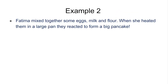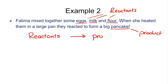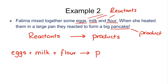Let's try another example using a very basic, non-chemical scenario. Fatma mixed together some eggs, some milk, and some flour, and when she heated them in a large pan they reacted to form a pancake. The eggs, the milk, and the flour are all our reactants, and the pancake is what we make, so that is our product. Remember, we always write the reactants, then an arrow, then the products. So our equation is: eggs plus milk plus flour, with an arrow giving us a pancake.